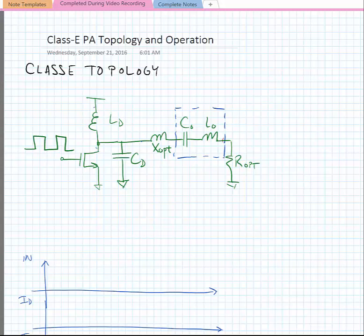Now we're going to start looking at the Class E topology. What I've shown here is a schematic for a Class E amplifier consisting of a MOS switch and the Class E pulse shaping network. The network consists of a choke inductance, a shunt capacitor at the drain of the transistor, and then a series resonant circuit and an optimized reactance and resistance.